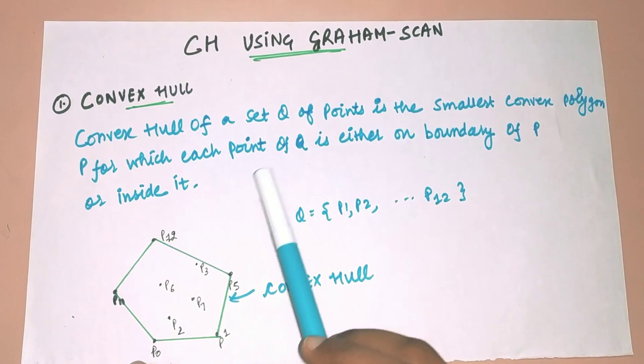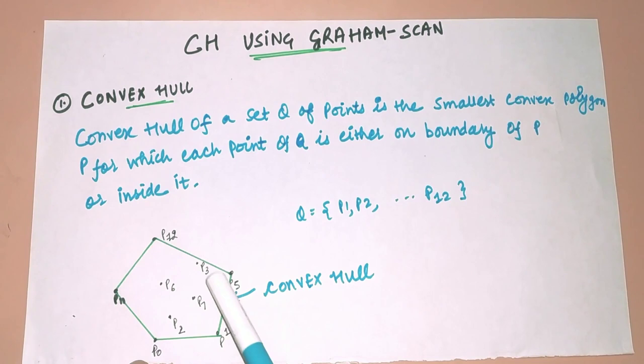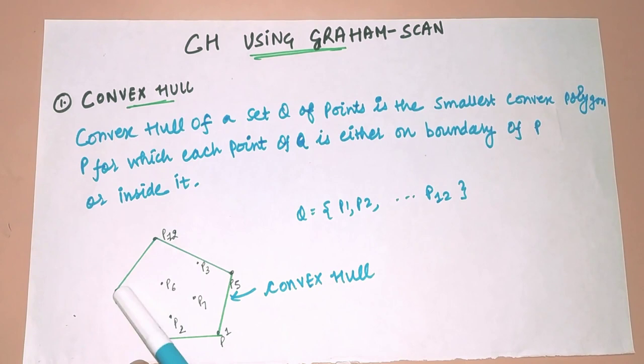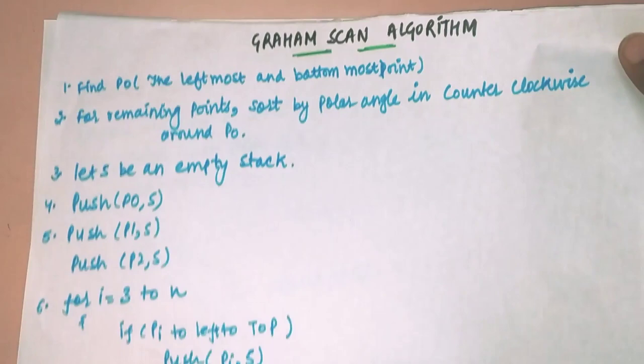Let me explain this definition with the help of an example. Let's say these are the set of points which belong to set Q given to us, and our task is to draw a polygon P such that all these points either lie on the boundary of polygon P or inside that polygon. The polygon highlighted using the green marker is the convex hull.